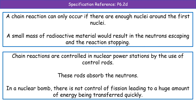In nuclear power stations, we must ensure chain reactions are controlled — an uncontrolled chain reaction would lead to a meltdown. We use control rods, which absorb neutrons. Once the reaction gets too vigorous, the rods are lowered into the reaction vessel to absorb the excess neutrons. To speed the reaction up again, just lift the control rods. In a nuclear bomb, there are no control rods and no control of fission at all, so the reaction continues along the chain getting larger and larger, generating a huge amount of energy in a short space of time.